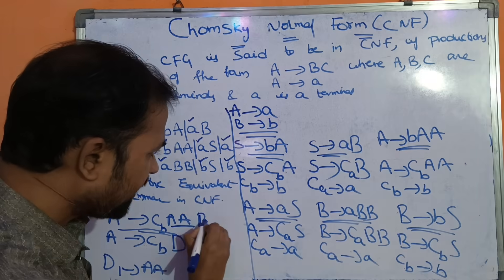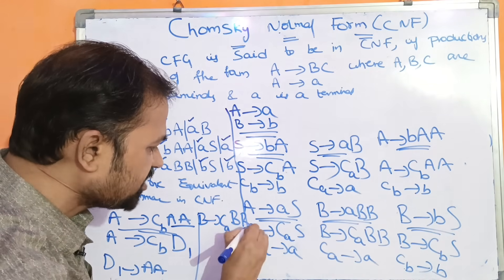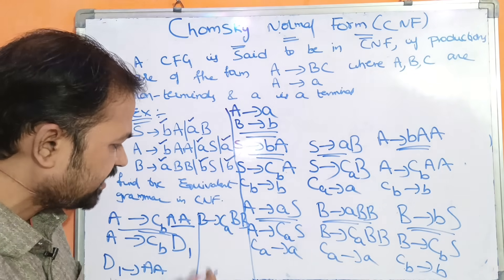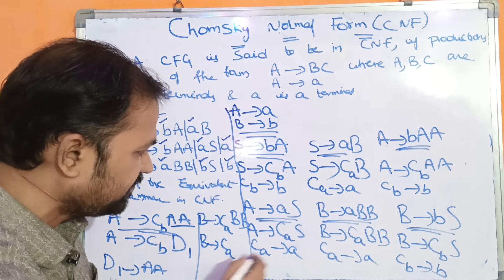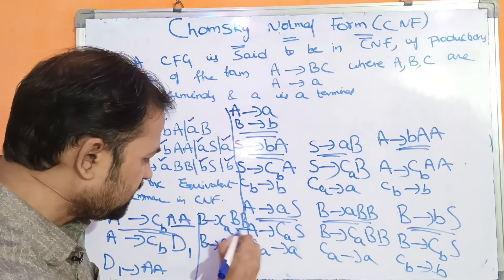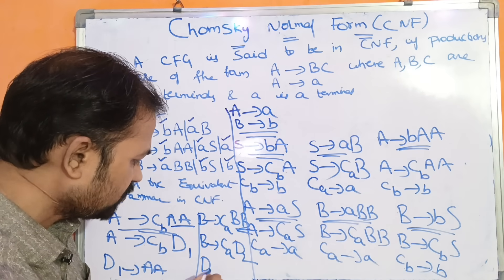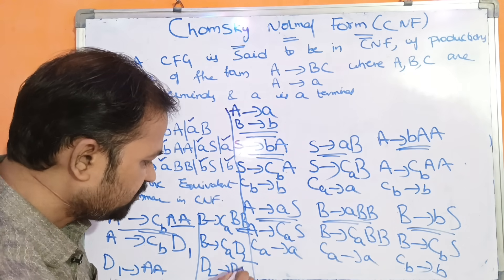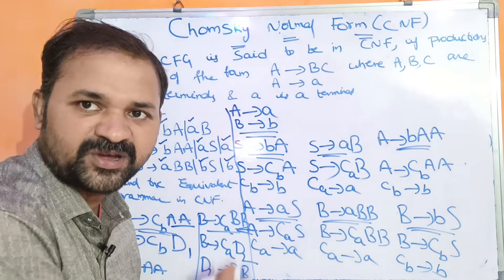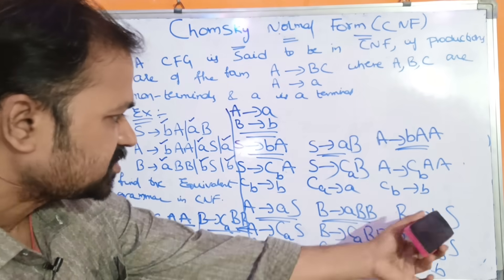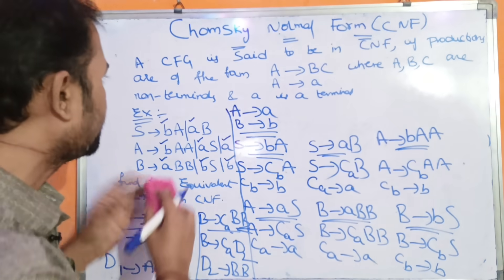B implies CABB is also not in Chomsky Normal Form because it has three non-terminals. CA is already defined as A. So replace BB with D2, giving B implies CAD2, where D2 implies BB. So B implies CAD2 has two non-terminals — CA and D2 — which is in CNF. B implies CBS: CB is non-terminal, S is non-terminal — two non-terminals — so this is in Chomsky Normal Form.